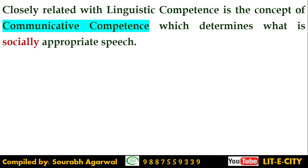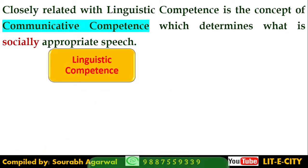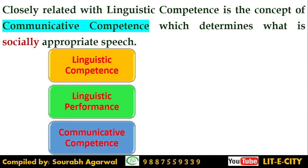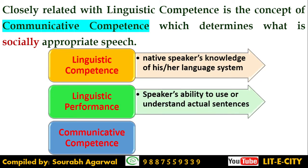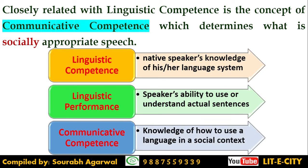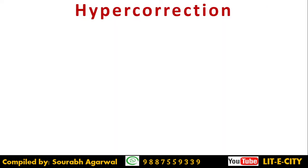Closely related is the concept of communicative competence, which is determined by social context and guides us on how to produce socially appropriate speech. To summarize the three terms: linguistic competence is a native speaker's knowledge of their language system; linguistic performance is the speaker's ability to use or understand actual sentences; and communicative competence is the knowledge of how to use a language appropriately in social contexts.